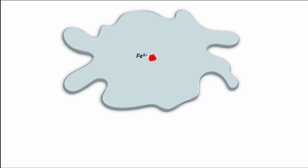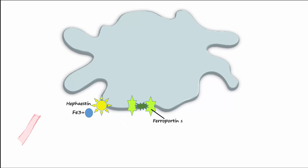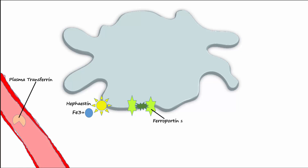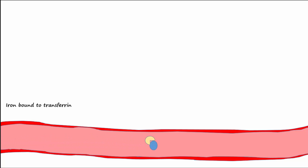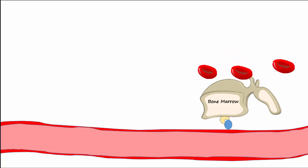Ferrous iron, or Fe2+, leaves the macrophage by way of the transporter ferroportin-1. It is then oxidized to ferric iron, or Fe3+, by hephaestin, and then enters the blood to bind to plasma transferrin. Most of this iron is used in the bone marrow, as there is a large iron requirement in making more hemoglobin for the two million red blood cells being produced every second.